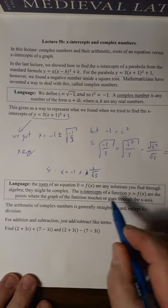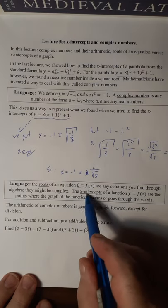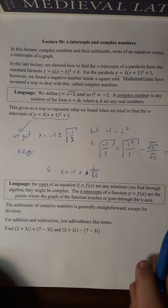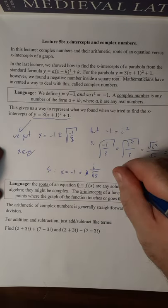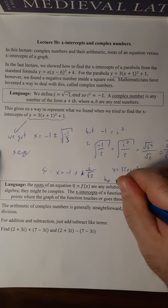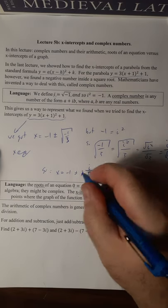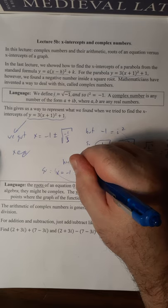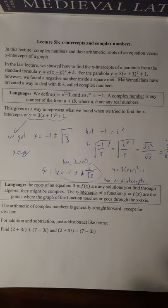So the roots of an equation 0 equals f of x are any solutions you get. They might be complex, they might be real. Complex just means there's an i in it. The x-intercepts of a function are the points where the graph of the function actually goes through or touches the x-axis. So the parabola y equals 3x plus 1 squared plus 1 has no x-intercepts because its graph does not go through the x-axis. It does have two roots, though. So a little bit of a distinction there. A root is what you do when you do the algebra. It could be complex or real. An x-intercept is when you look at the graph, does it actually cross or touch the x-axis. Those are slightly different things.